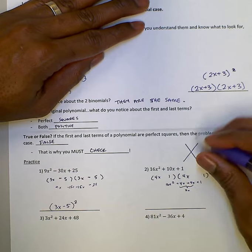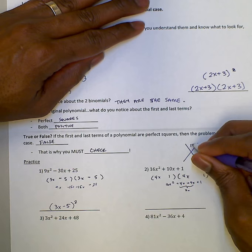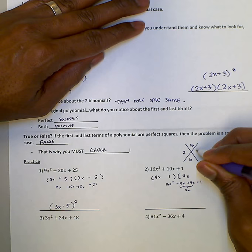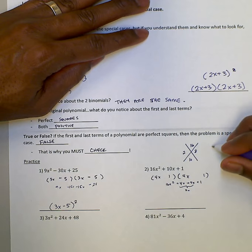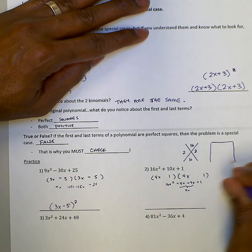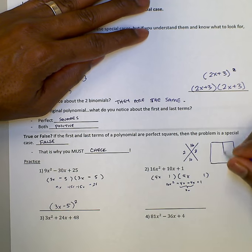So we're trying to find two numbers to multiply to give us 16, add to give us 10. Those two numbers are 2 and 8. And put it in our box. Got to start drawing my box better. Put it in our box here.